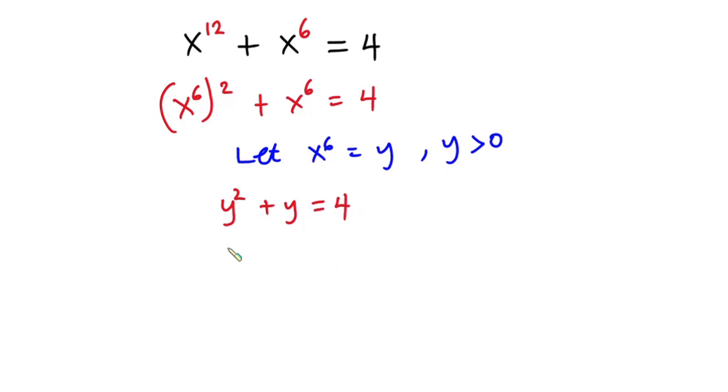Now let's equate everything to 0. So we have y to the second power plus y minus 4 is equal to 0. And now you can see we have a nice quadratic equation, but unfortunately we can't use the factoring method for this.